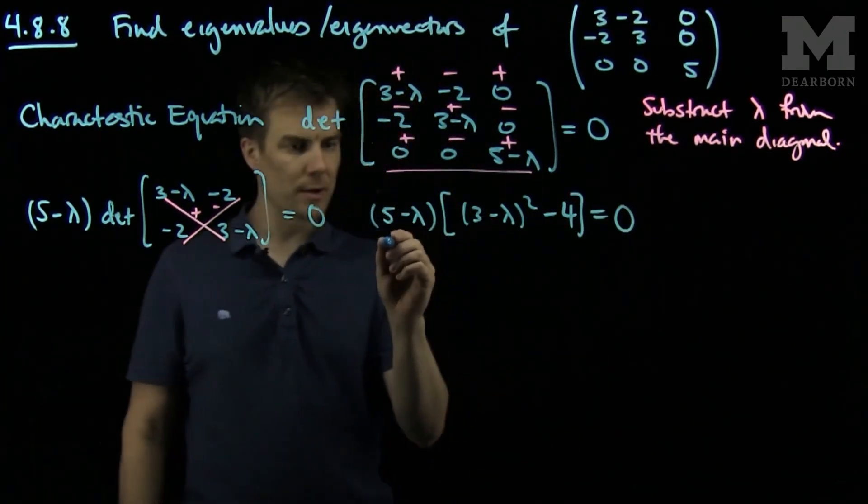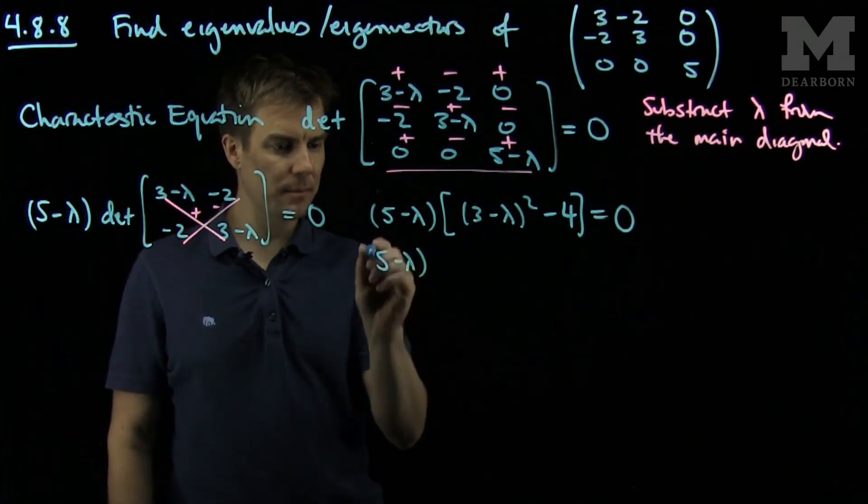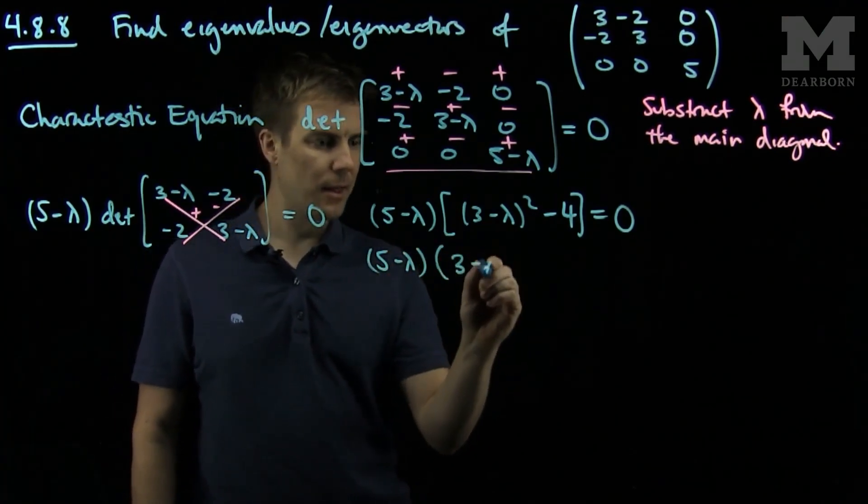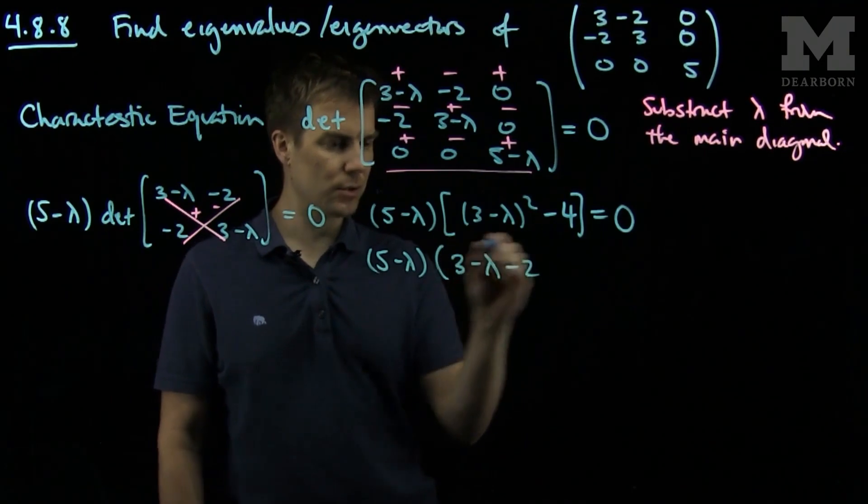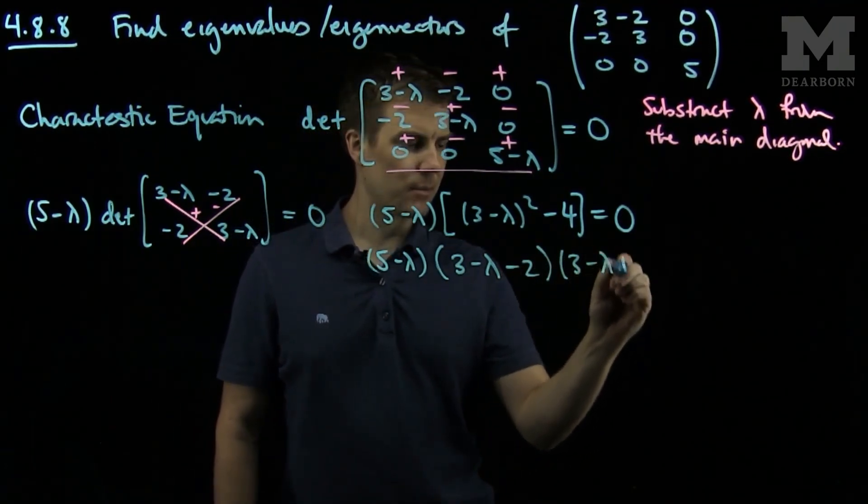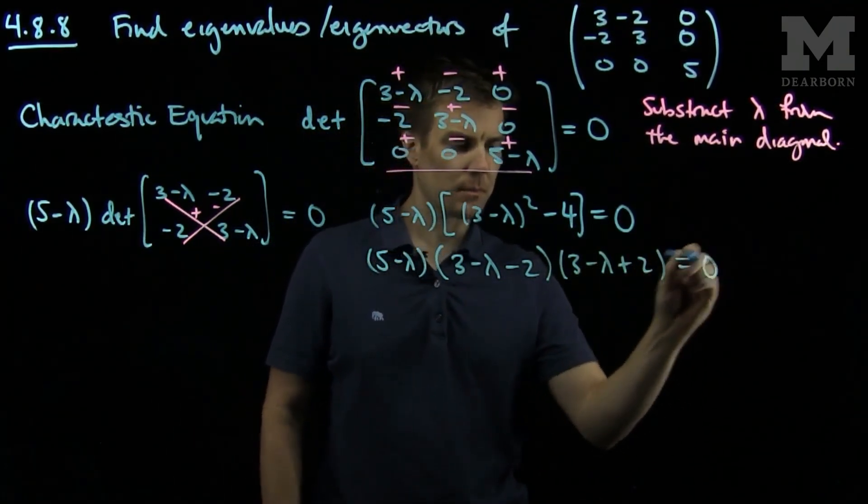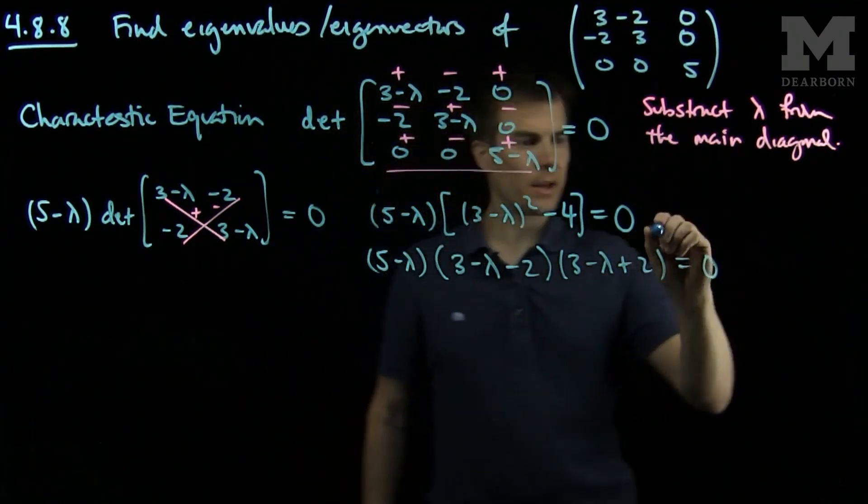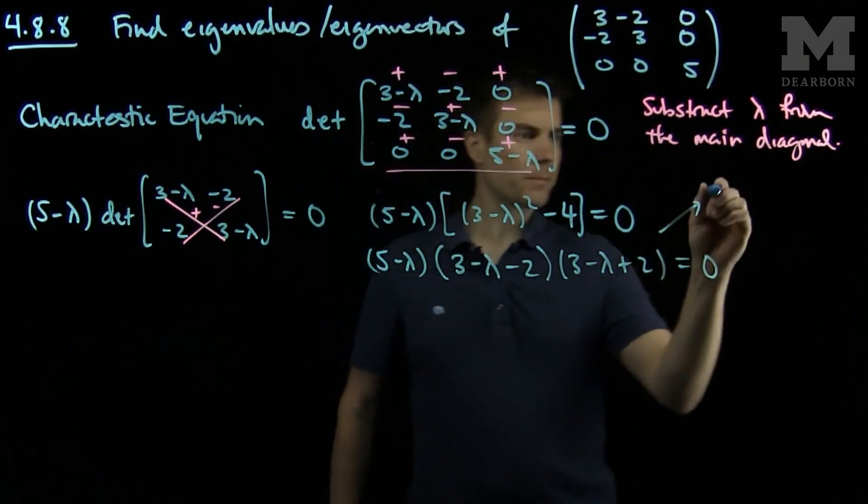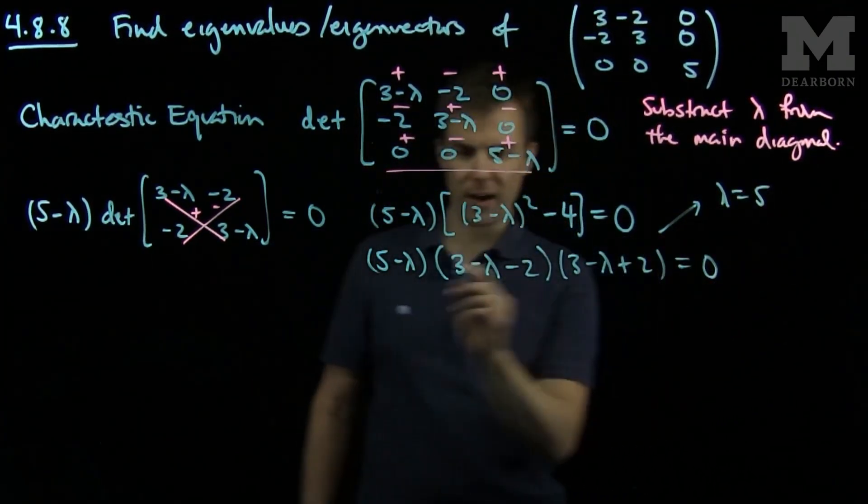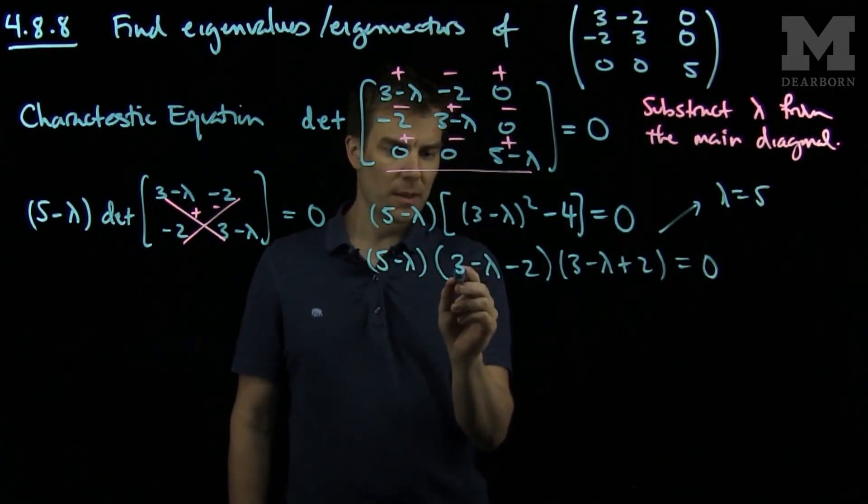And now this is the difference of two squares. So this is 5 minus lambda, and then 3 minus lambda minus 2, 3 minus lambda plus 2 equals 0. And from this, we can see what the eigenvalues are. We have lambda equals 5.